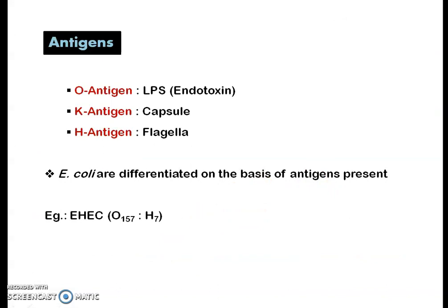There are mainly three types of antigens present in E. coli. The first is O antigen, which is present on the LPS (lipopolysaccharide), otherwise known as endotoxin. Since E. coli is gram-negative, almost all gram-negative bacteria have this endotoxin as an attribute of their lipopolysaccharide cell wall.